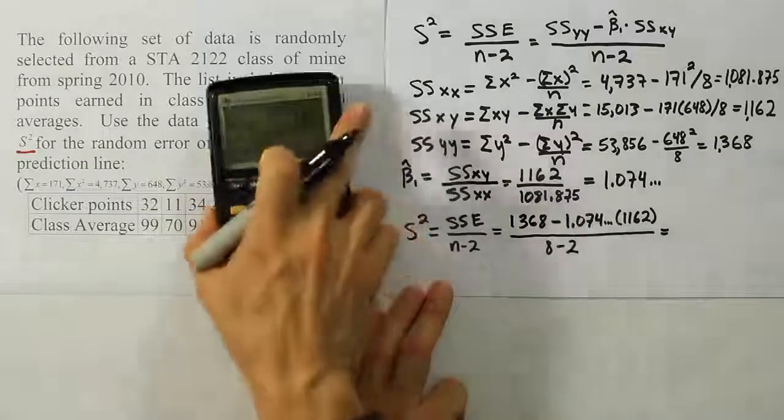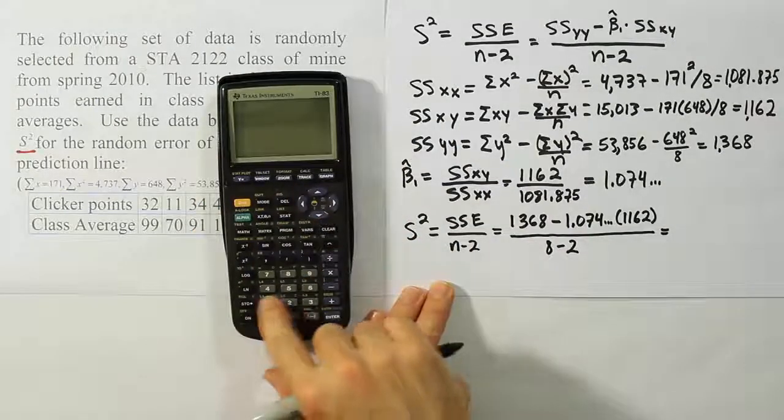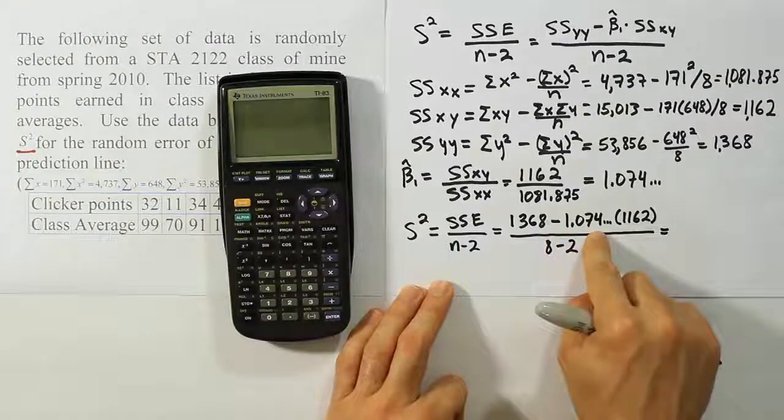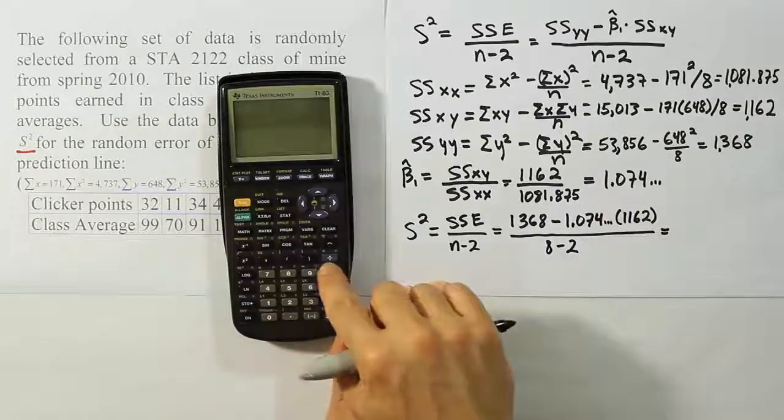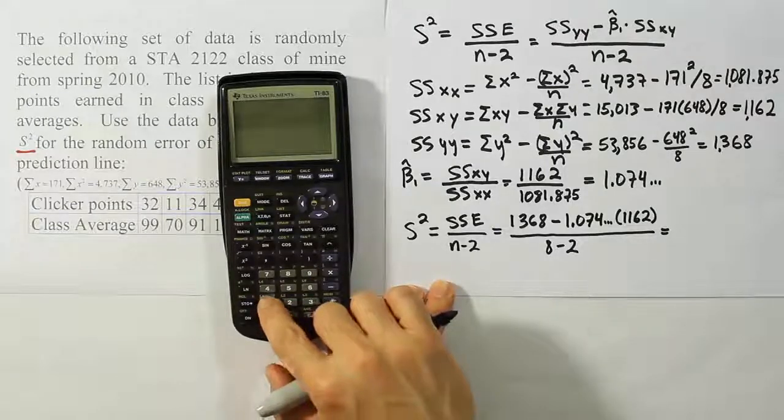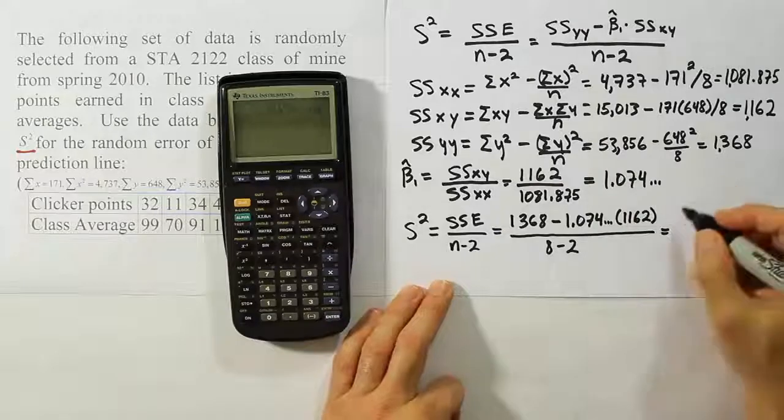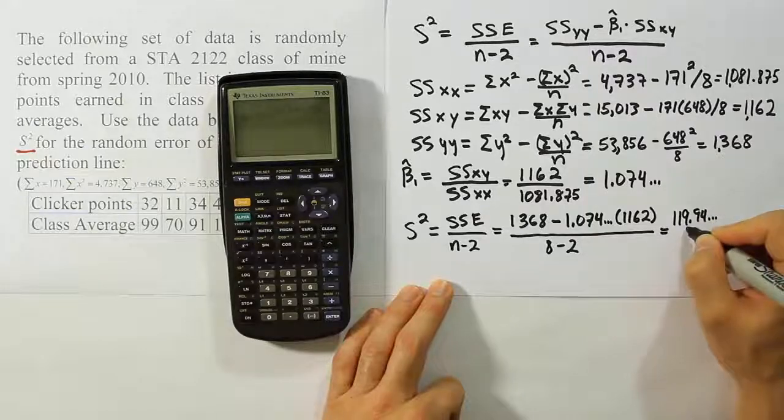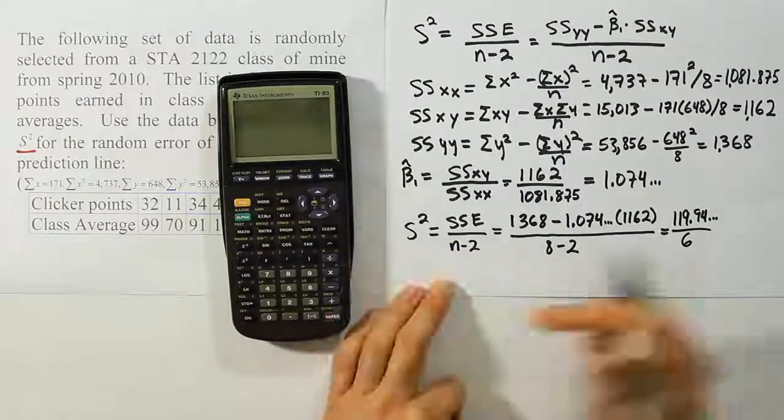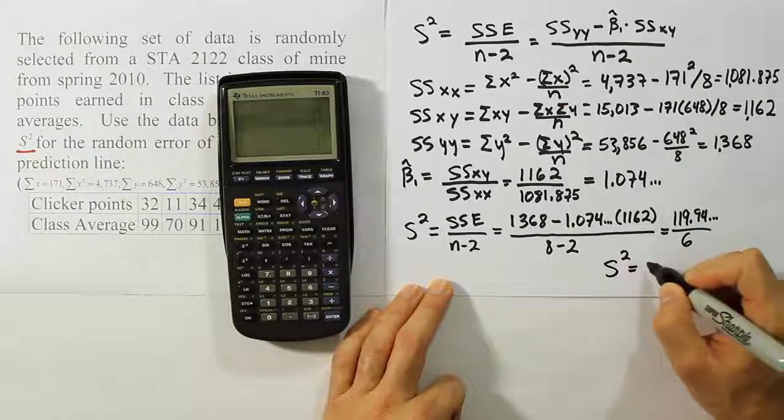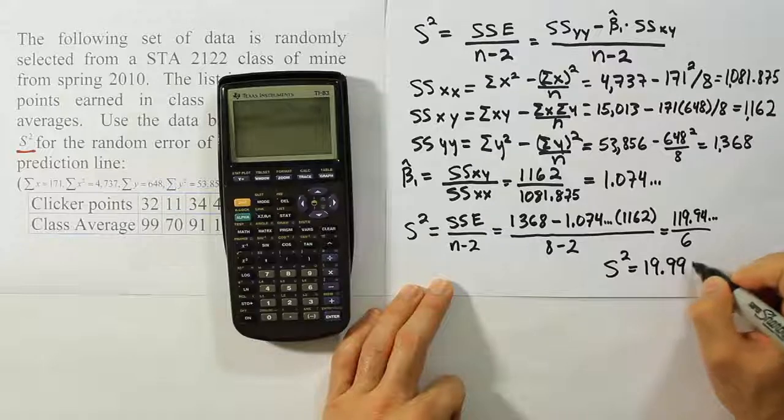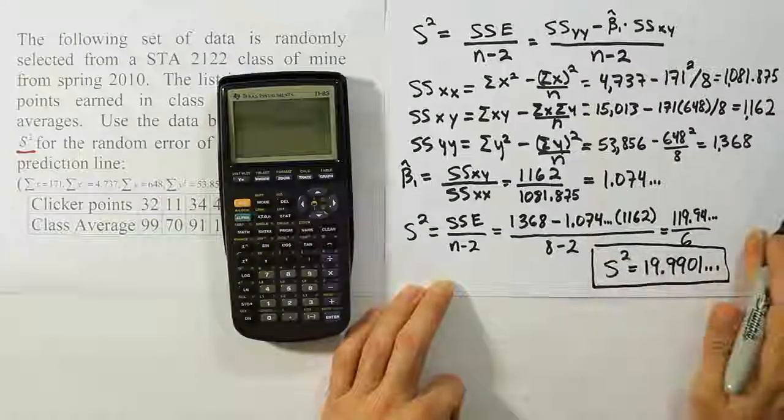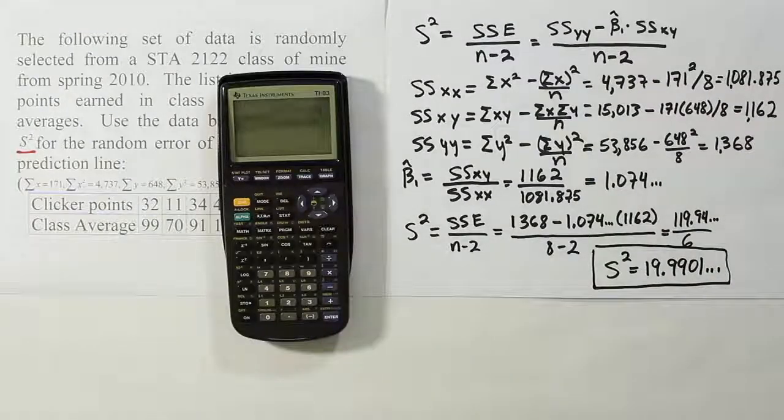Let's see what that works out to be in the calculator. So we'll have 1368 minus, I stored my slope, I stored this beta 1 hat value of the slope in for X. So I'll just do X times 1162. Hit enter for the numerator of the fraction. That's going to give me 119.94 dot dot dot divided by 6. So divide that answer by 6. And our final answer for S squared works out to be 19.9901 dot dot dot. So that's it. Our variance for the error term is 19.9901 on and on and on.